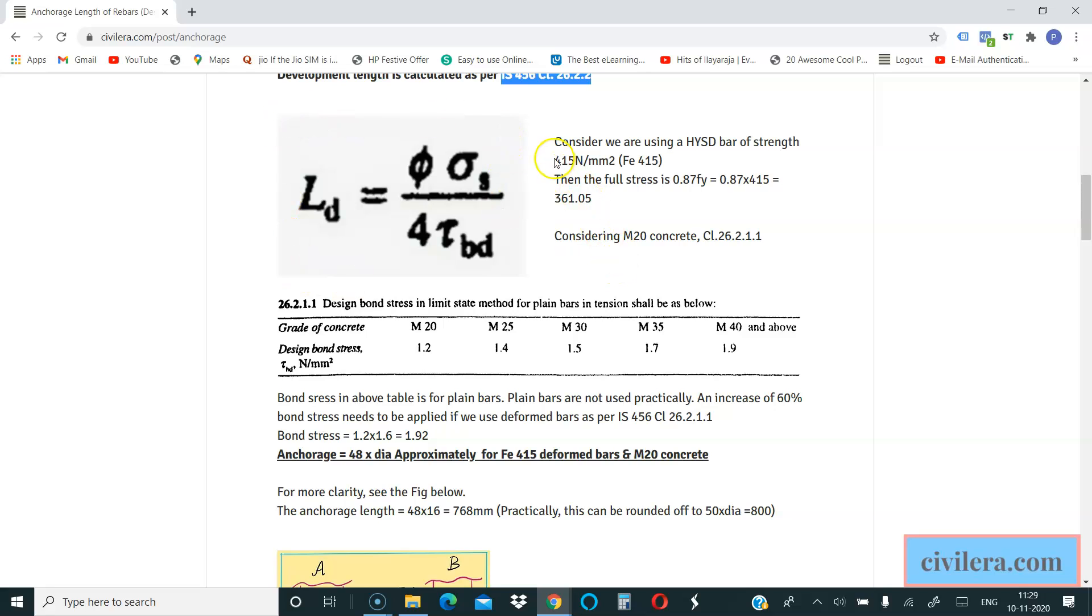You need to understand that sigma s means your 0.87 fy because that is the factor of safety for materials, 0.87 equals 1 by 1.15, the material factor of safety. So if you say your grade of steel is 415, you are required to reduce it as a factor of safety, and that's what you do. And then 4 is a constant and tau bd is what you get from this table.